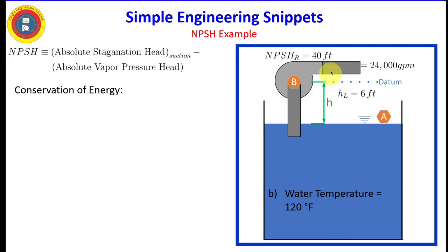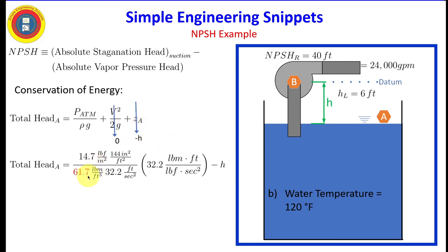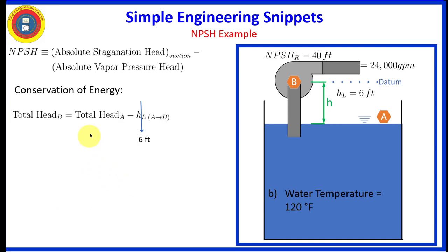Okay, now we still need the total stagnation head at Bravo. Again, we're going to be using conservation of energy. And I am going through this pretty quickly because it's identical to what we went through before. And some of the numbers are different. And we get the total head at Alpha is equal to 34.3 feet minus H. Before we had 33.9 feet minus H. So this difference in density had a difference but not a huge difference. And the head loss remains the same. And so now we have the total head at Bravo.